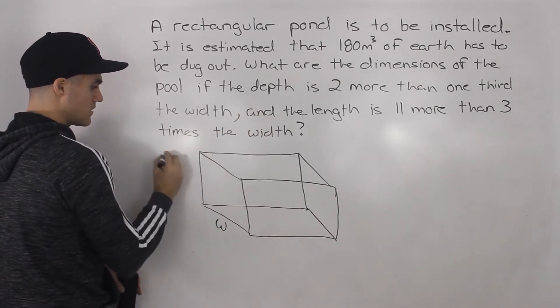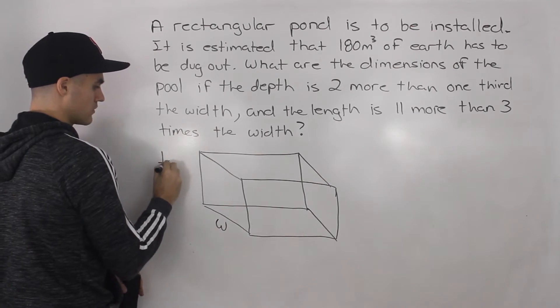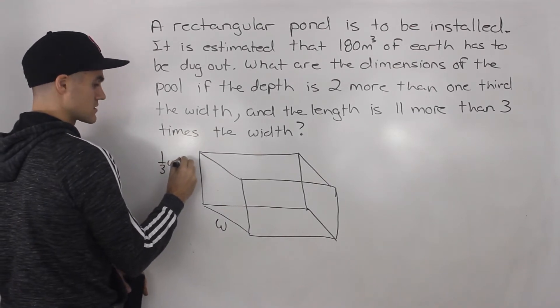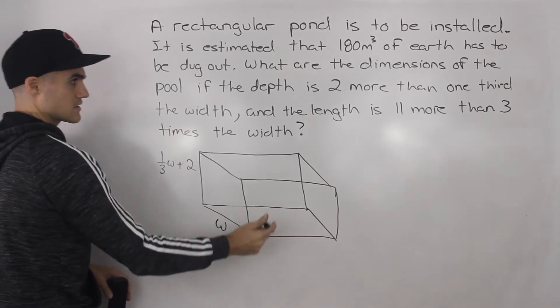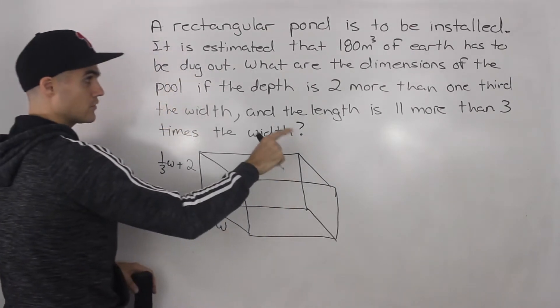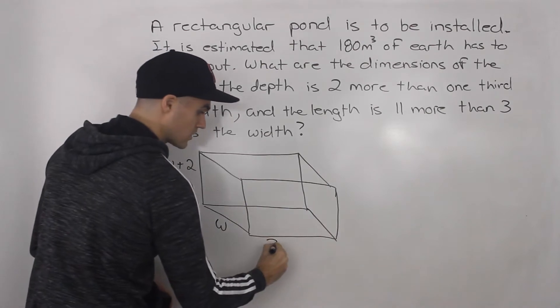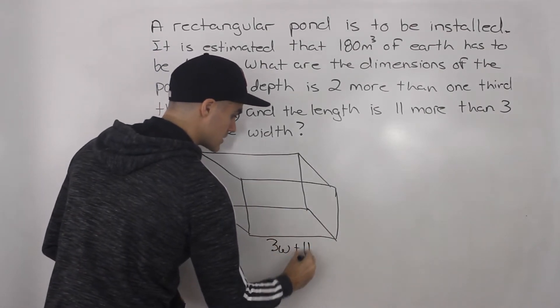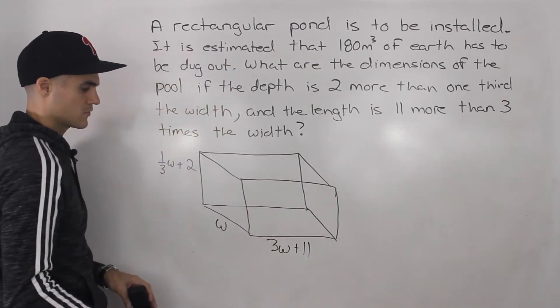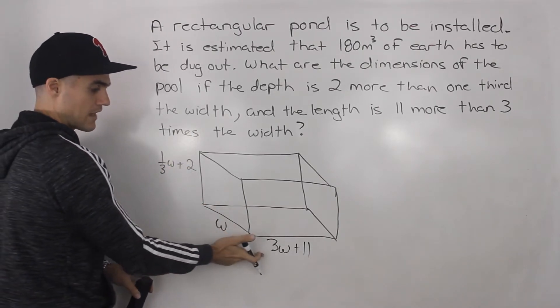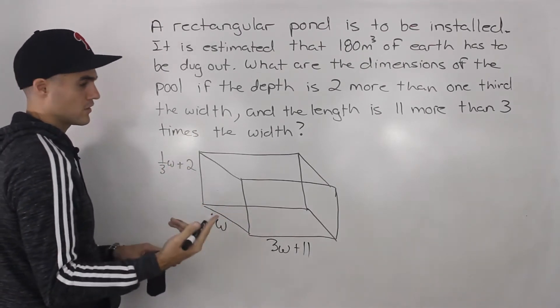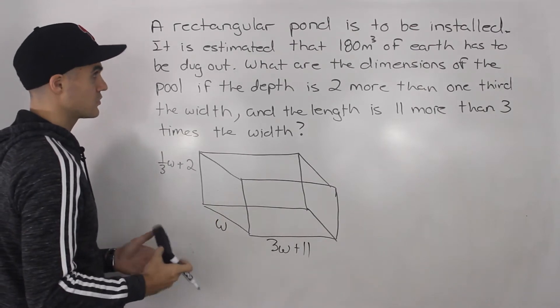So the depth is two more than one third the width. So the height would be one third times w plus two. Then the length is going to be 11 more than three times the width. So three times the width plus 11. And now we have expressions for the height, the width, and the length, all in terms of one variable, which is pretty good so far.